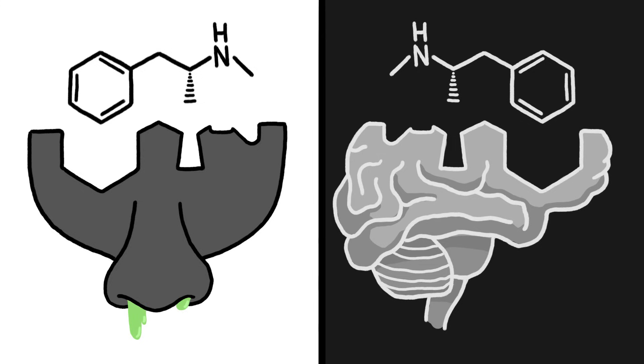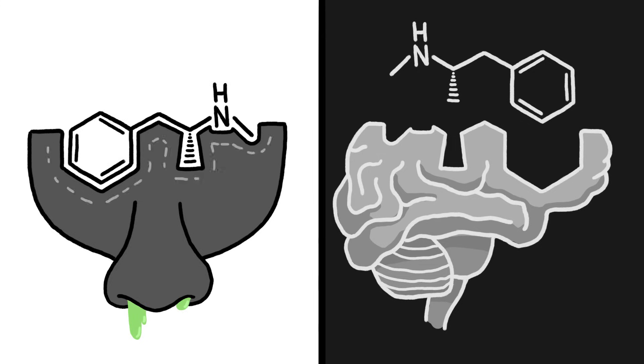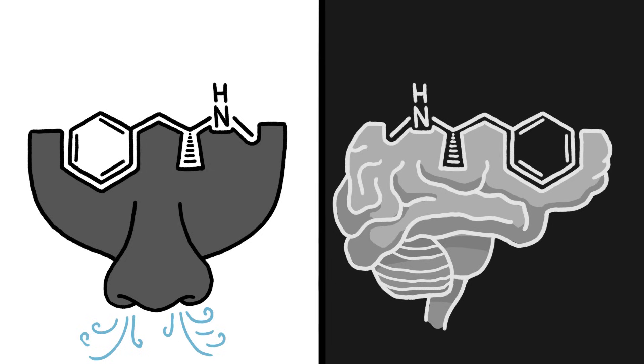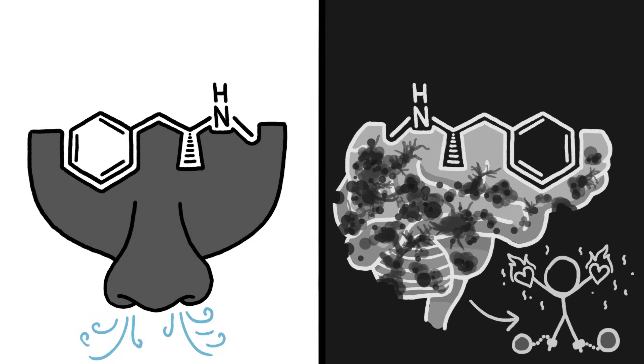When the receptors for the nasal spray molecules are activated, they send out a neurotransmission that helps open the nasal passages. But when the receptors for the street drug molecules get filled, the resulting neurotransmission causes spurts of euphoria and aphrodisia in the near term, and addiction and brain damage in the long term.